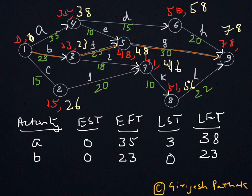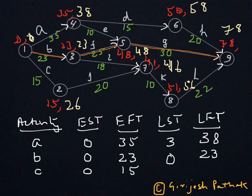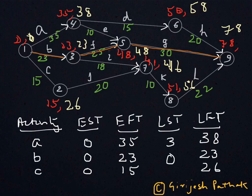For activity C: it starts at node 1, so the Earliest Start Time is 0. Adding the activity time of 15 days gives an Earliest Finish Time of 15. The Latest Finish Time is taken from node 2 where activity C ends, and the latest time there is 26, so the Latest Finish Time is 26. Subtracting the activity time — 26 minus 15 — gives a Latest Start Time of 11 days.